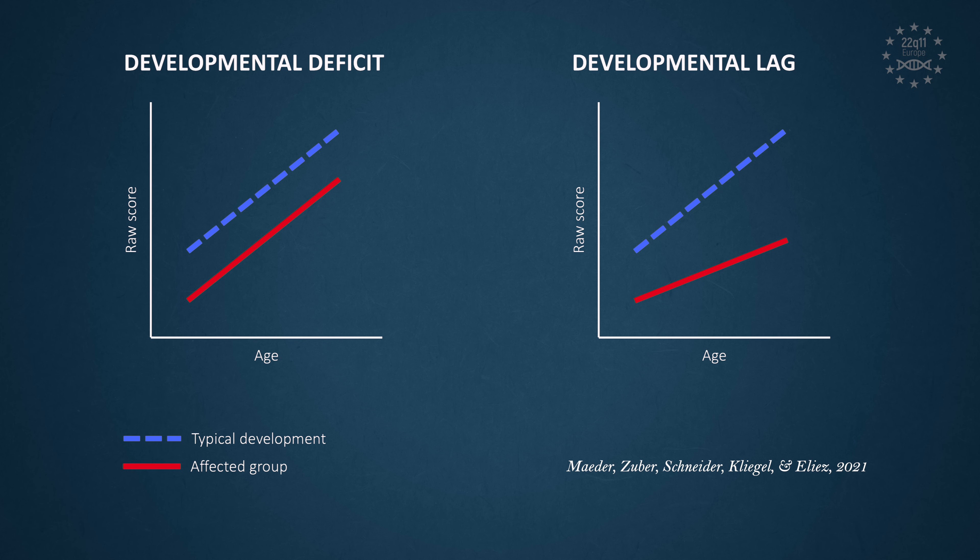Depending on the expected developmental trajectory, one can decide or predict how best to support individuals with 22Q. At the University of Geneva, researchers examined how different cognitive processes develop with age in young people with 22Q and their siblings. They were able to observe that performance on tasks of attention and executive function mainly follow two patterns. What you can see on screen is a red line representing the trajectory of people with 22Q compared to their peers in blue.